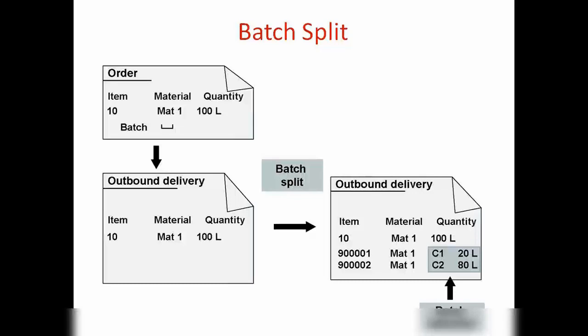You have the option to use items in an outbound delivery in the form of batches. For example, if you are delivering 100 pieces of a material, you can set it up so that the first 20 were created in a different batch — batch number this — and the remaining 80 were created in the next batch, batch number this. This is called batch split.